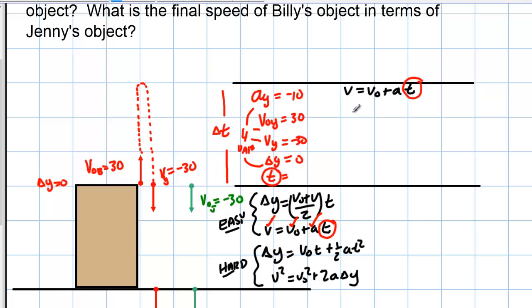So, I'm looking for the time here. So, the time is going to be V final minus V initial over acceleration. So, if I write that out, my V final is negative 30 minus my V initial, which is positive 30, over negative 10, which is acceleration of gravity. So, my time is going to be 60 over 10, or it's just going to be 6 seconds. Okay. That's it. That's how much longer Billy's is in the air than Jenny's. Okay. That's how much longer.